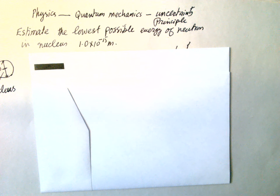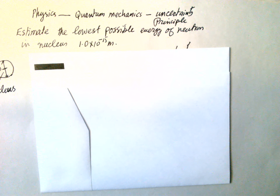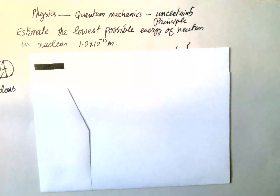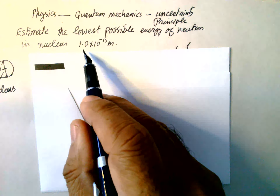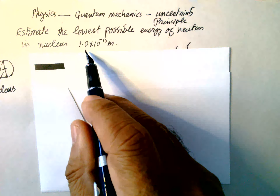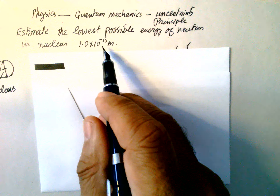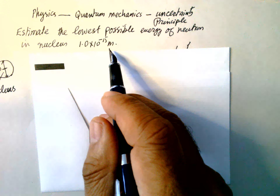Hello Physics. Quantum Mechanics, Uncertainty Principle. The problem is to estimate the lowest possible energy of a neutron in a nucleus. A nucleus is 1 Fermi, that is 1 × 10⁻¹⁵ meters.